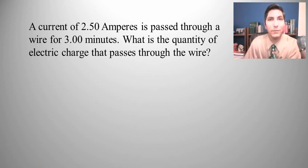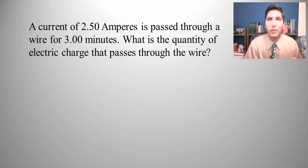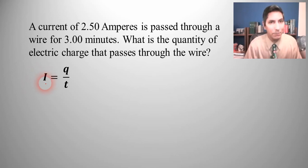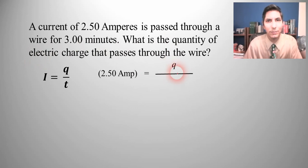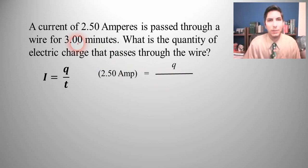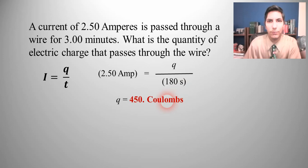Let's solve a practice problem. We have a current of 2.50 amps being passed through a wire for three minutes. What is the quantity of electric charge that passes through the wire? We use I equals Q over T. I is 2.50 amps, Q is our unknown, and T must be in seconds — three minutes times 60 equals 180 seconds. Solving for Q gives us 450 coulombs.